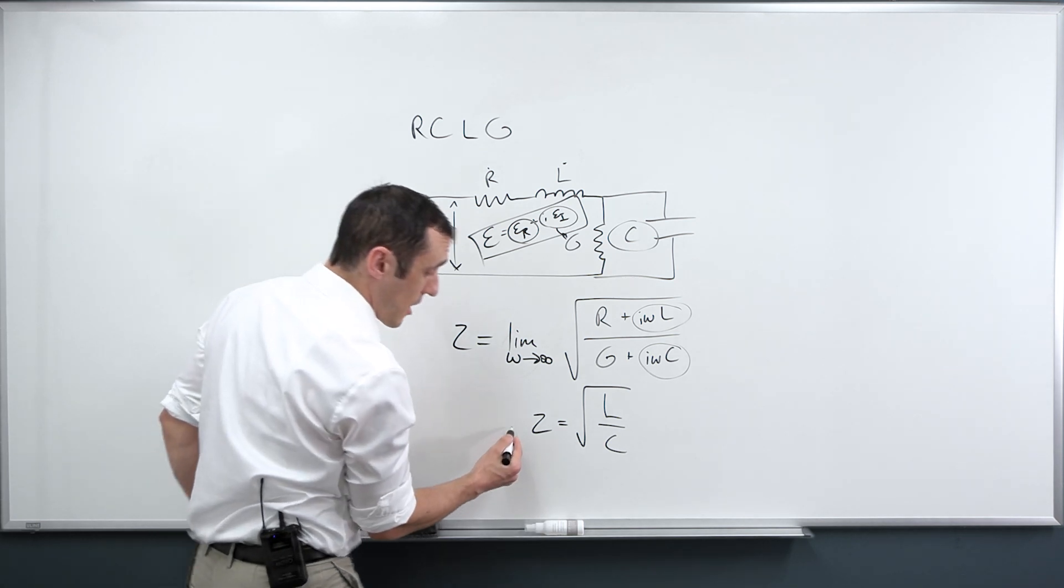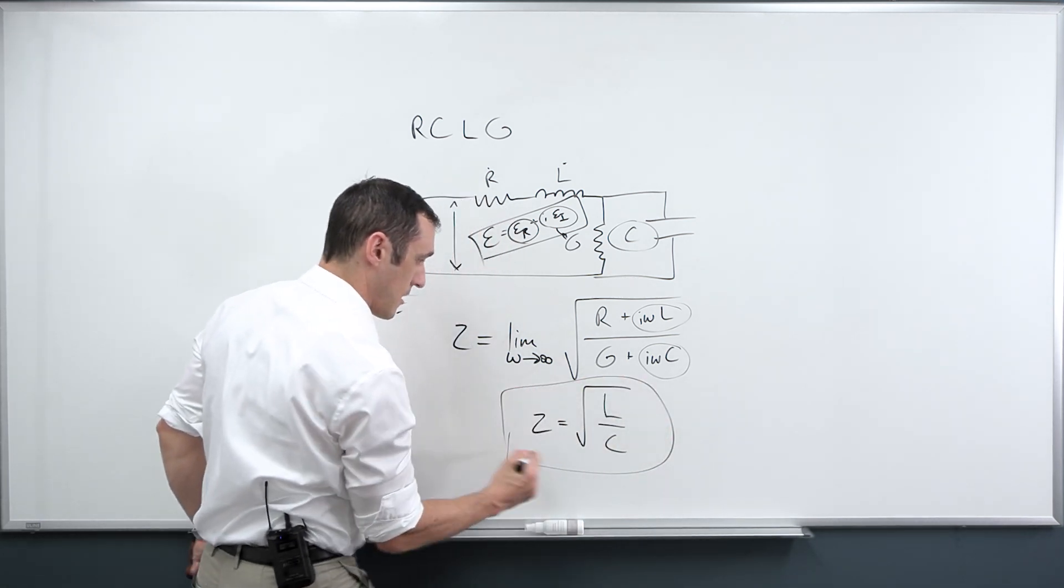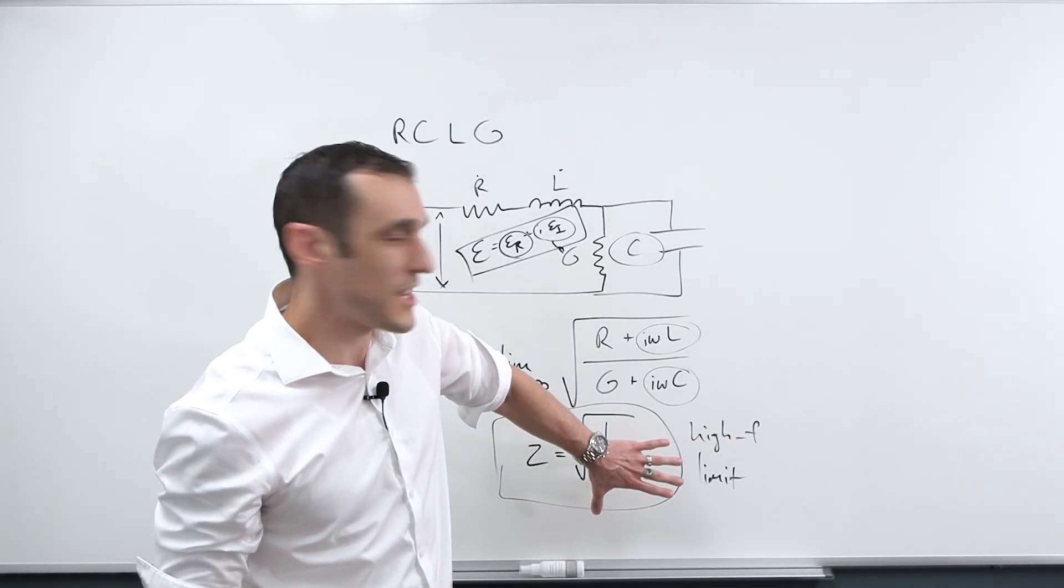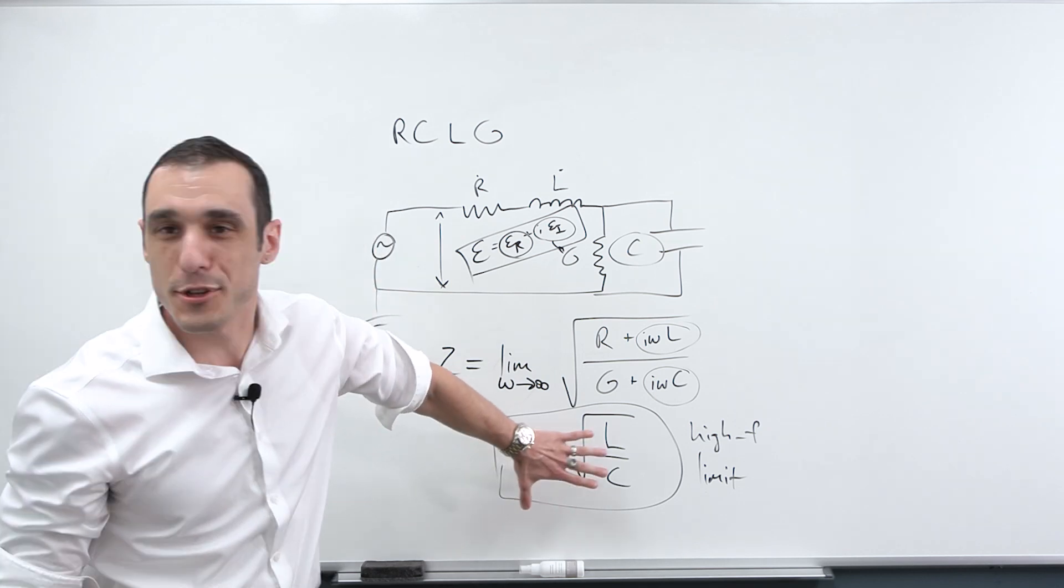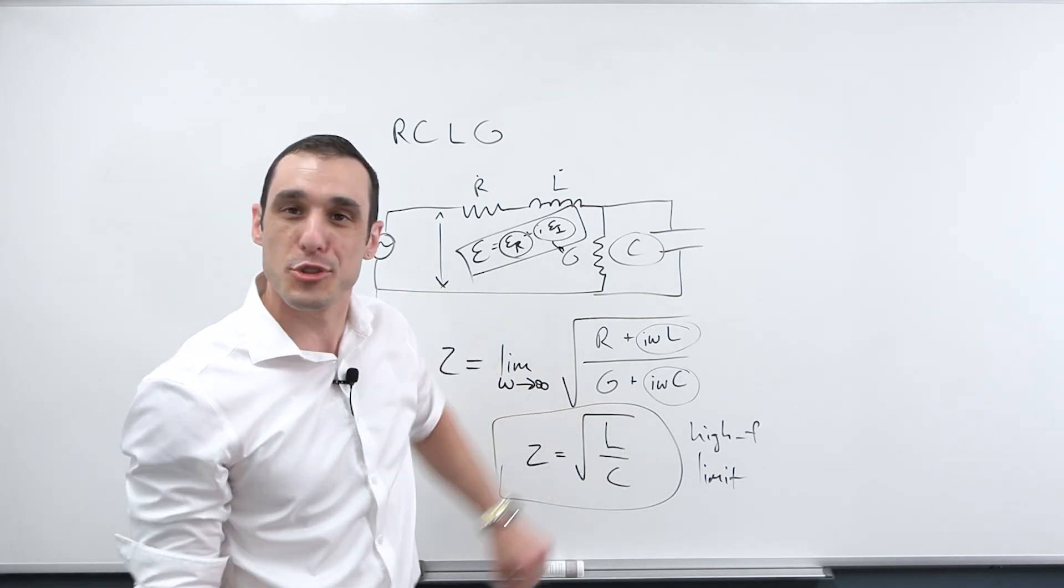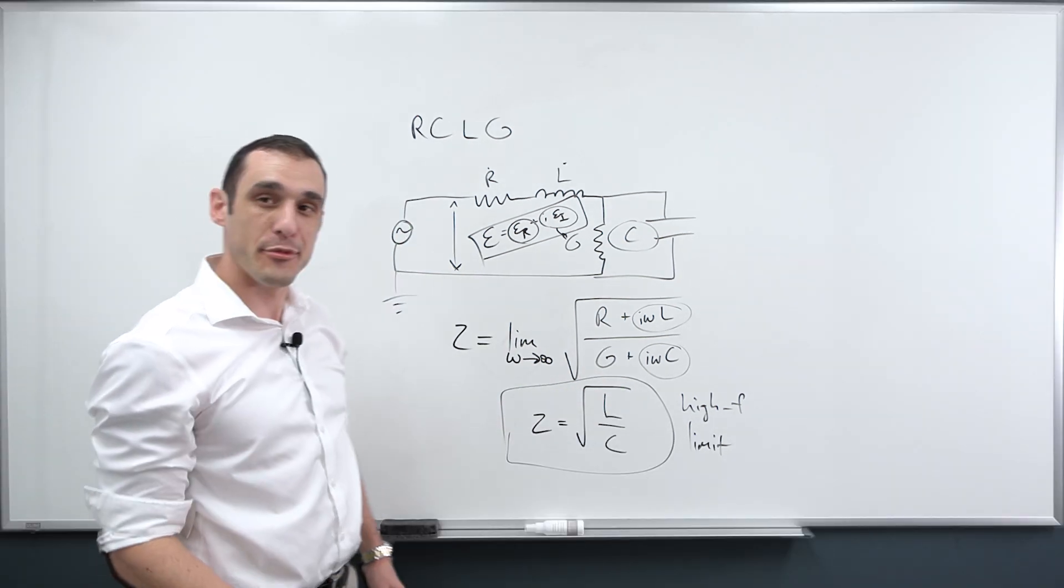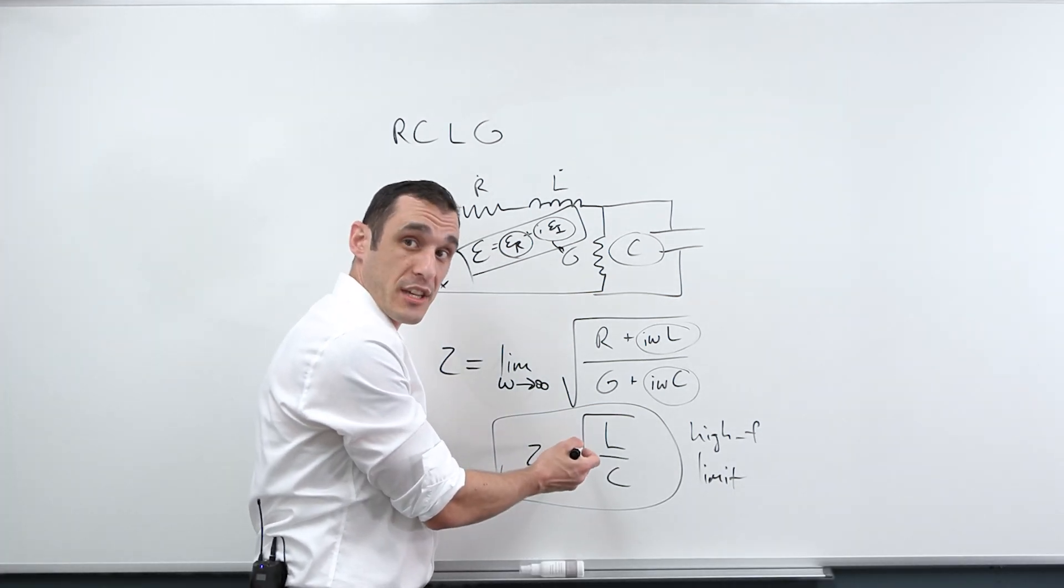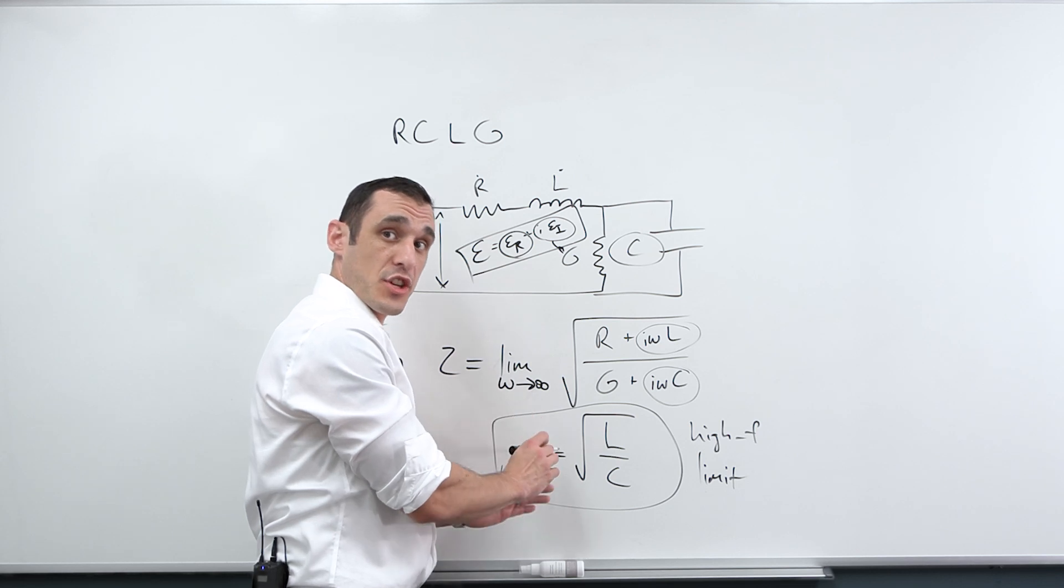So this is what's often called a high frequency limit. So this is just an approximation because guess what? This is also wrong. This is not actually true in reality. In the high frequency limit, the characteristic impedance does not actually converge to this. This is just an approximation.